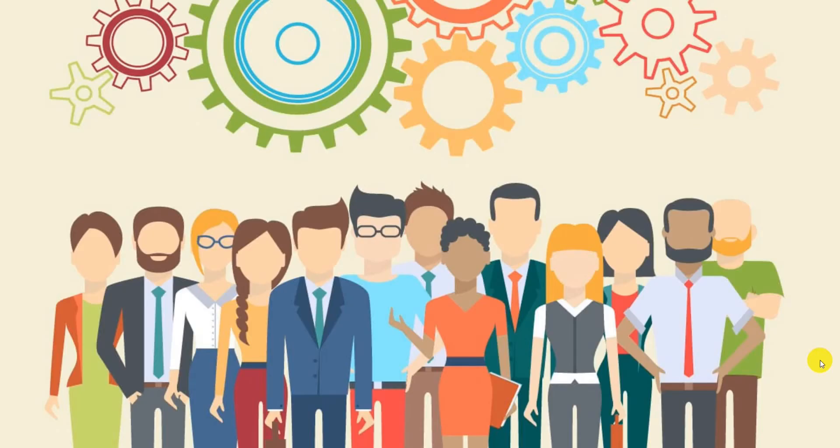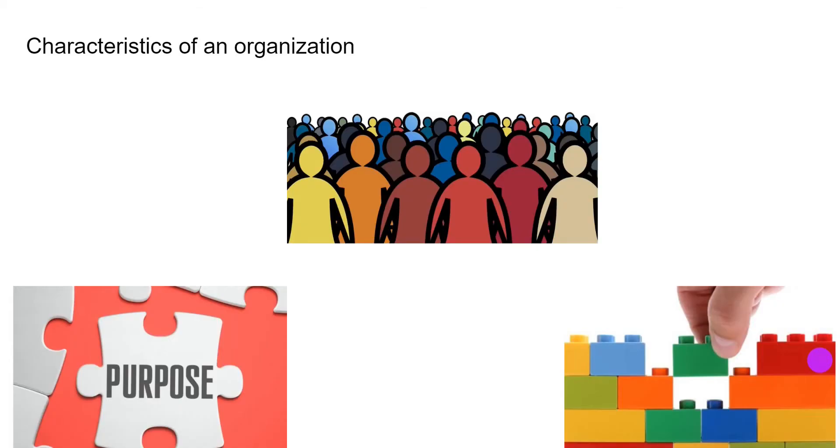So what is an organization? An organization is defined as a deliberate arrangement of people to accomplish some specific purpose that individuals independently cannot accomplish alone. Now, while we talk about some common characteristics of organizations, they are that they...